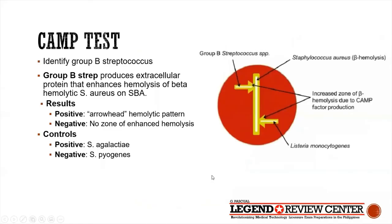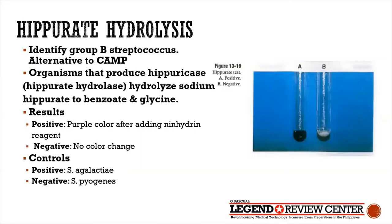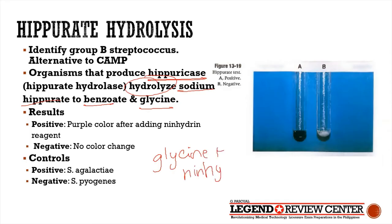The CAMP test is positive for Group B strep, not Group A. Another test for Group B is hippurate hydrolysis. Organisms that produce the enzyme hippuricase hydrolyze sodium hippurate to benzoate and glycine. Glycine then reacts with the ninhydrin reagent to form a purple color, which is the positive result of the hippurate hydrolysis test. Group B strep is positive.